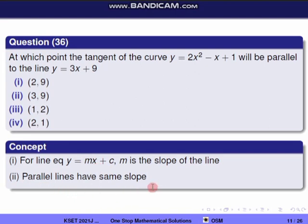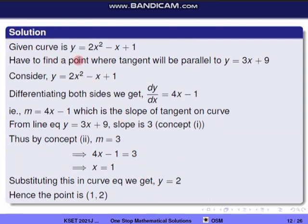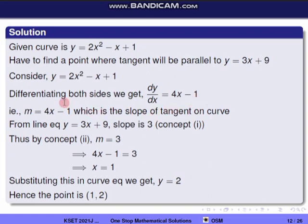The curve is y equal to 2x² minus x plus 1. We differentiate to find the tangent slope: dy/dx equal to 4x minus 1. So the tangent slope is m equal to 4x minus 1.